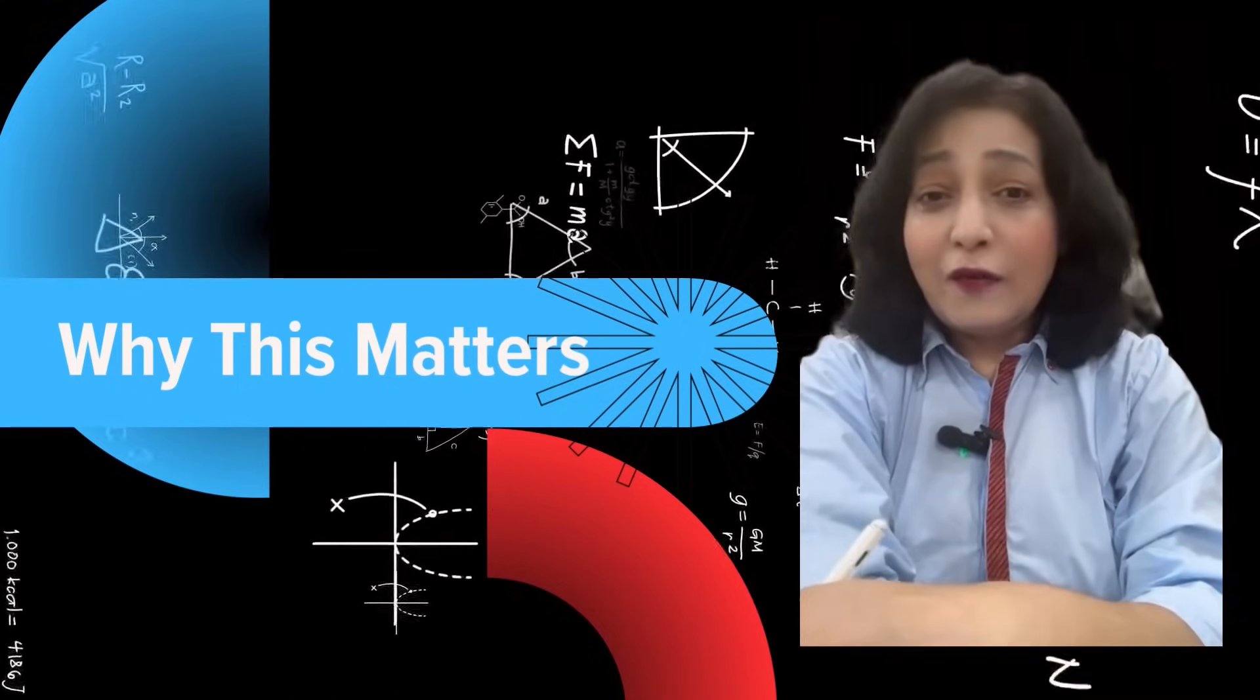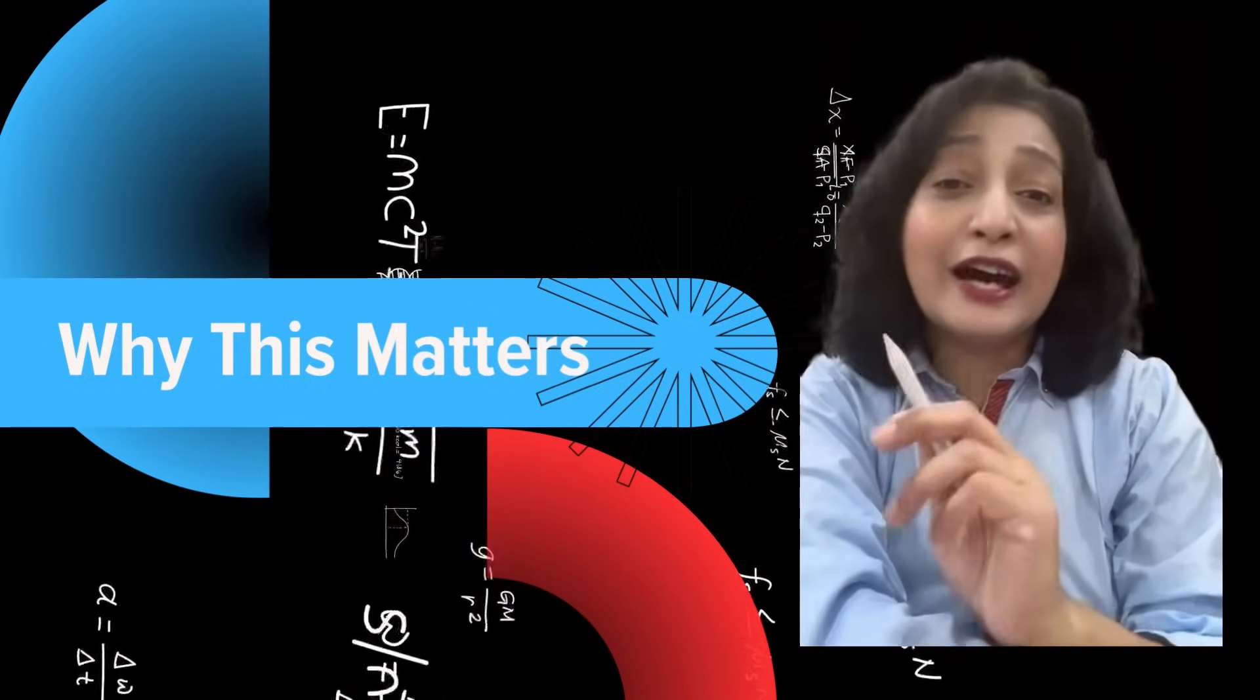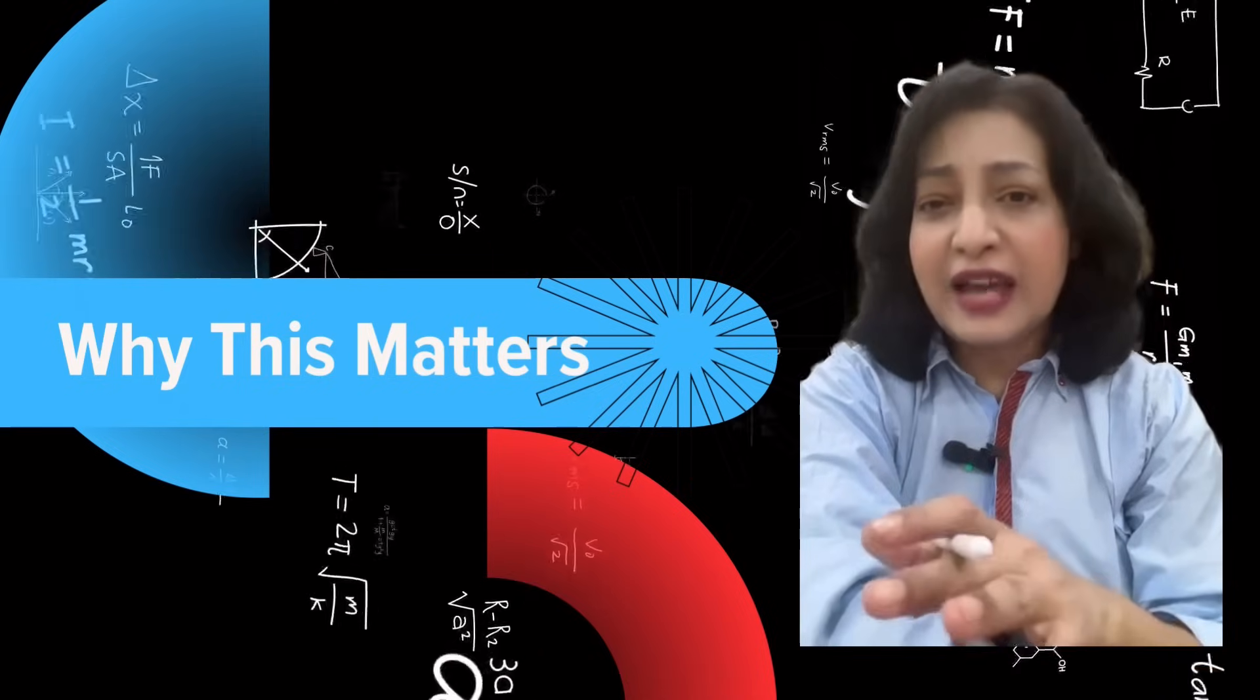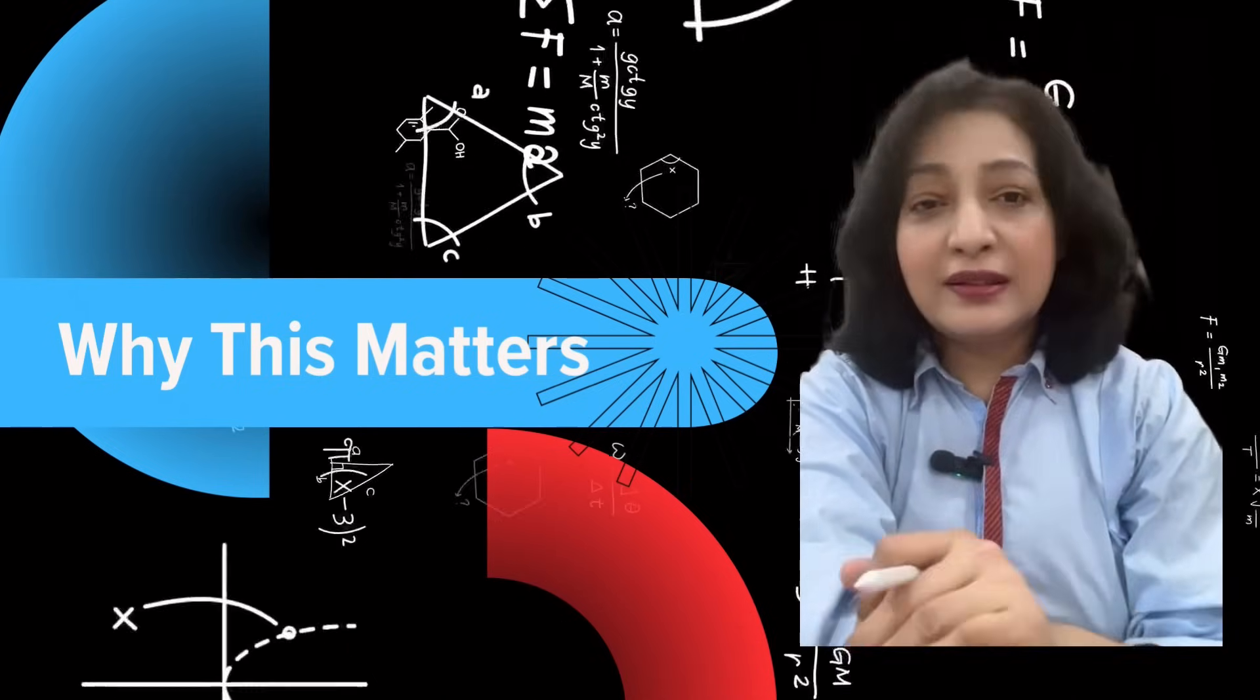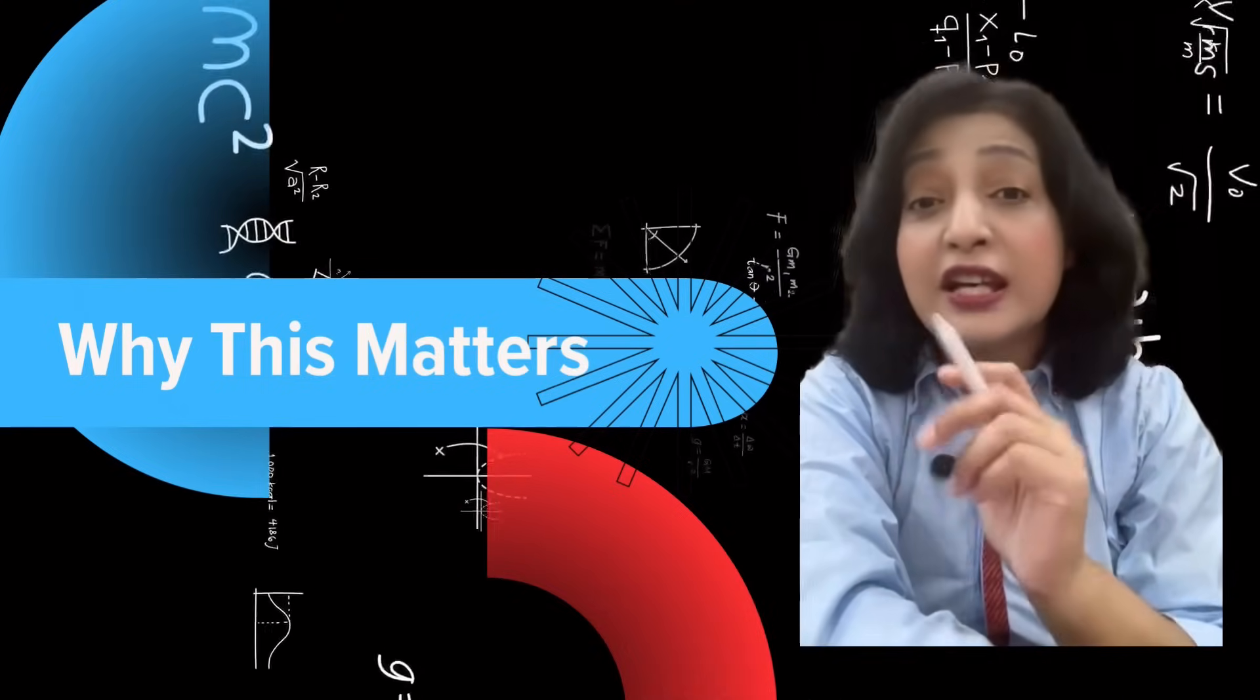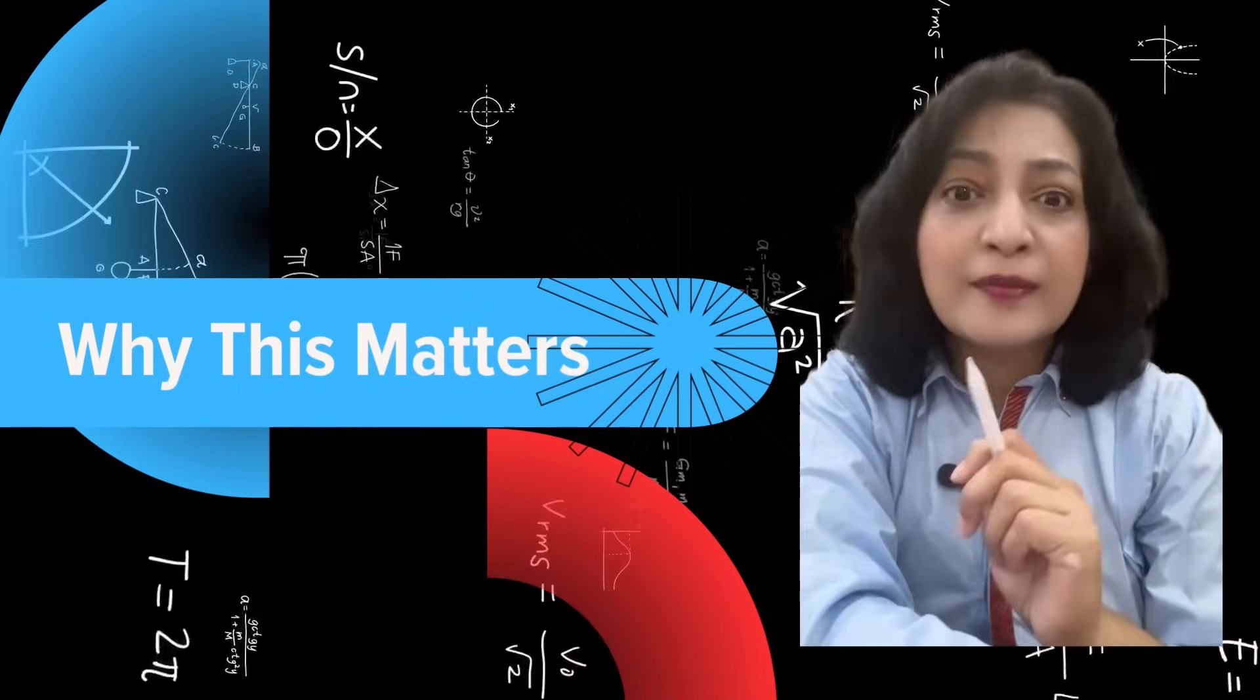Why does this matter? Why do we care about sets and Venn diagrams? They are super useful in maths, especially in probability and statistics. For example, if you are finding the chance that someone likes apples or bananas, that's a union. If it's apples and bananas, that's an intersection. You will see these in O-level exams, especially in questions about grouping data and solving logic problems. Don't ignore it—it's important.